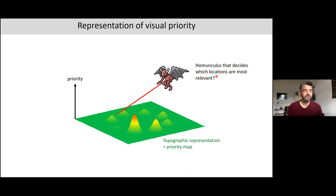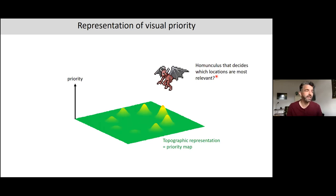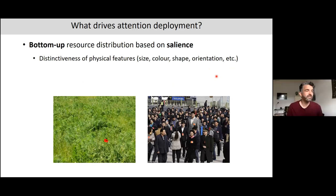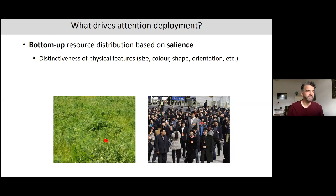We don't want to assume there is some homunculus that determines the visual priority of elements in the visual field. What we want is a comprehensive theory of visual attention that predicts under which circumstances which information receives priority. One obvious factor is bottom-up visual attention, where resources are distributed as a function of salience. For example, a poppy flower in an otherwise green field literally pops out, and a person much taller than others is obviously much easier to find.